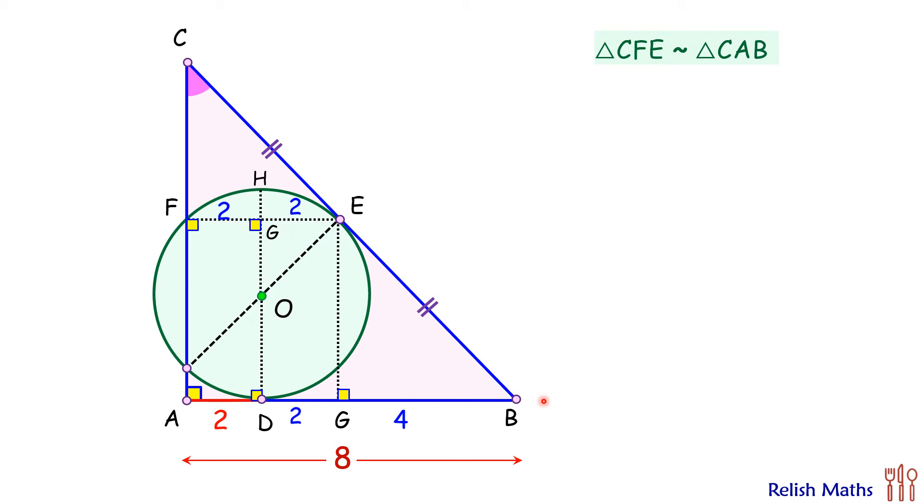From point B, external point, we are drawing two tangents BD and BE. These two tangents will be equal in length. BD is 6 and thus BE will also be 6 cm.